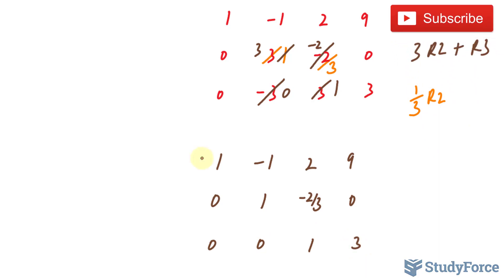Now that we have 1's in the main diagonal, we can easily find out what x, y, and z is by doing some back substitution. First and foremost, this part right here tells us that z is equal to 3.